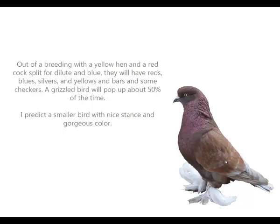Out of a breeding with a yellow hen and a red cock split for dilute and blue, they will have reds, blues, silvers, yellows, and bars, and some checkers. A grizzled hen will pop up about 50% of the time. I predict a smaller bird with a nice stance and gorgeous color.